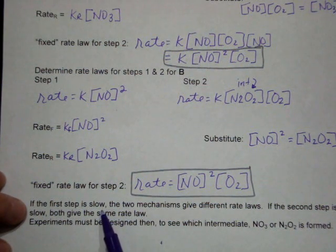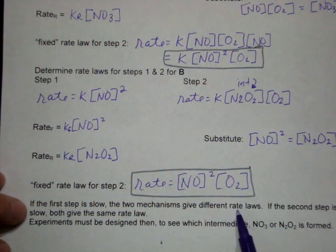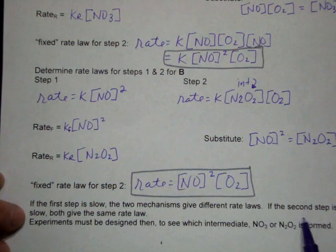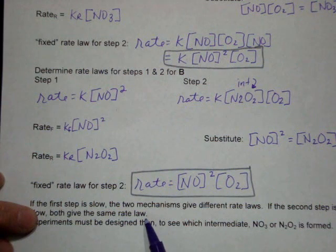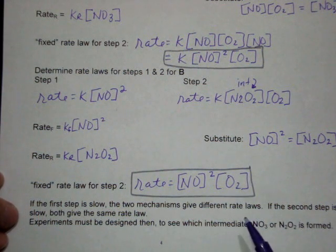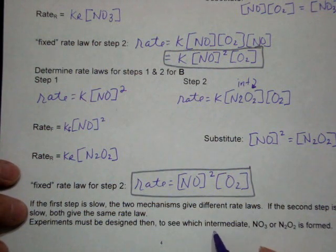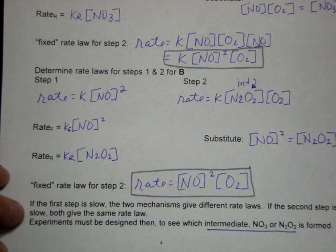If we assumed that the second step was the slow step. If the first step was slow, the two mechanisms give different rate laws. If the second step is slow, they both would give the same rate law. We can't identify which one is actually correct without experimentally determining which intermediate gets formed during the reaction.